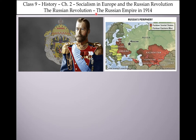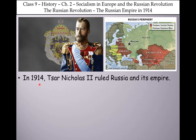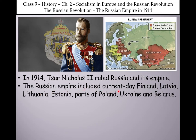The first part of the Russian Revolution is the Russian Empire in 1914. In 1914, Tsar Nicholas II ruled Russia and its empire.